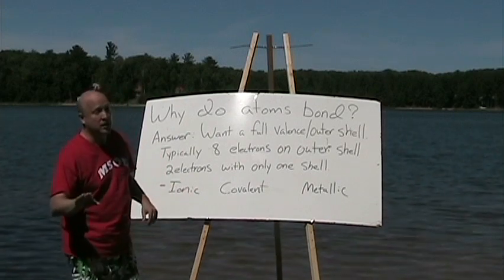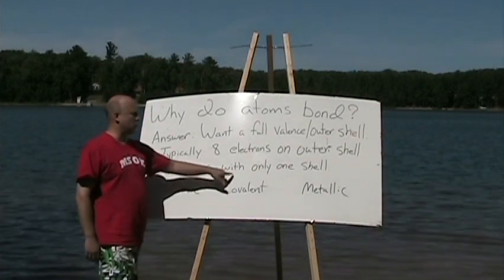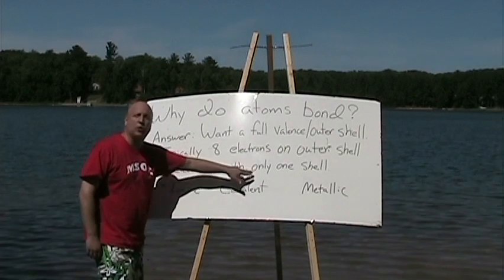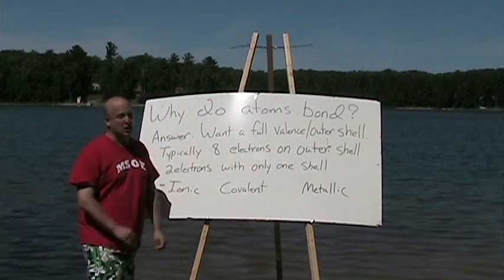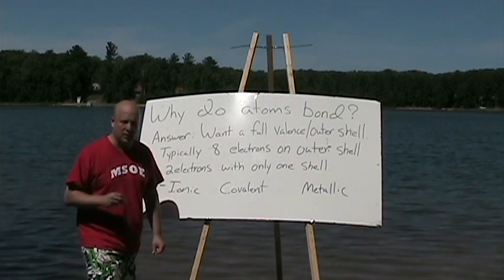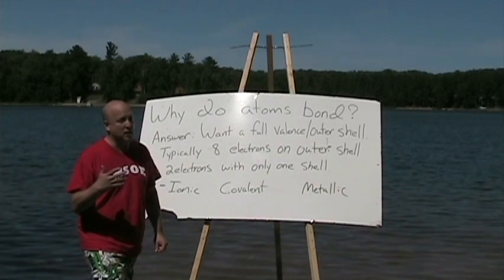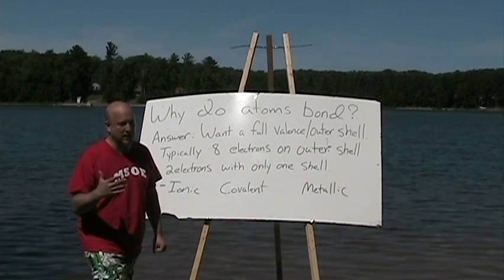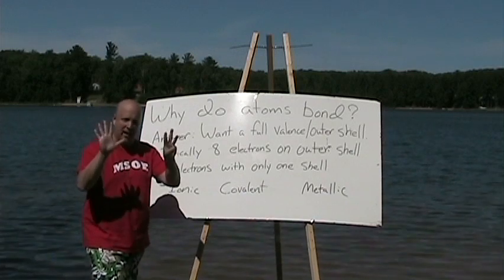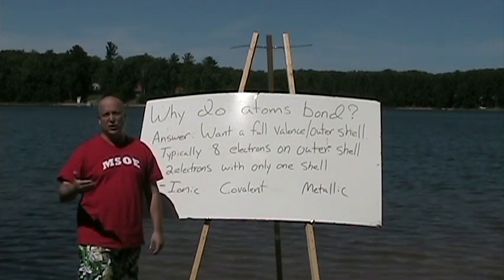There is an exception, though. You can only have two electrons with only one shell — it's full. An atom is full with just two electrons if you only have one shell. That's the exception. If you have two shells, it's full with eight electrons. If you have three shells, it's full with eight electrons. If you have four or more shells — five, six, seven — it still takes a total of eight electrons to make it full.